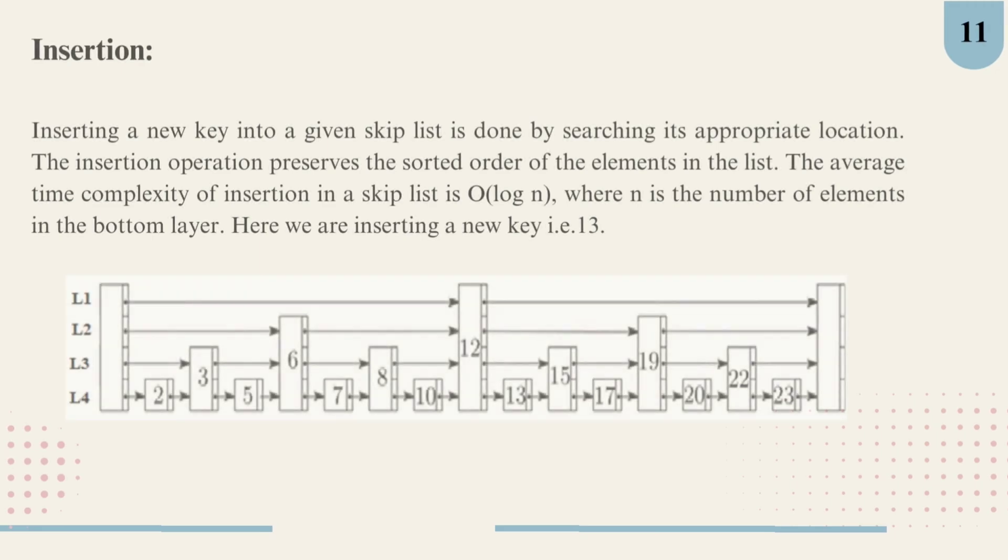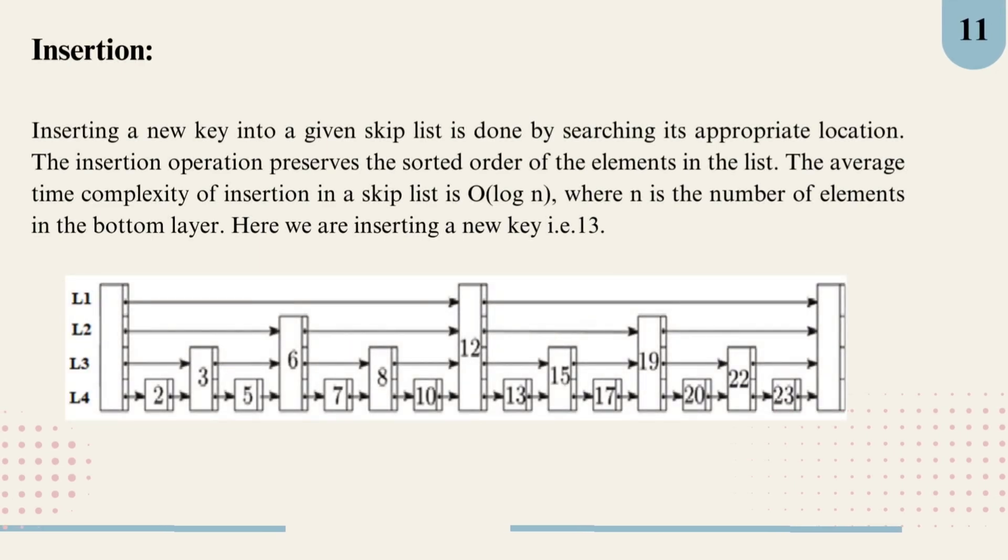Now, coming to the insertion process in a skip list. First, we need to search for the right spot in a skip list. It's like finding the perfect place on a bookshelf. The key here is that we want to maintain the sorted order of all the elements. Now, the cool part: the average time it takes to insert a new key in a skip list is just O(log n). This means it's pretty efficient, especially when compared to other data structures. So if we have n elements in the bottom layer, our insertion process remains speedy. Let's keep it simple: locate the right position, insert the key, and keep the sorted order intact.